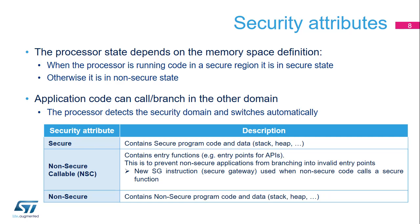Inter-security domain calls and returns are supported. The processor detects the security domain of the branch address and switches domain automatically. The ARMv8-M defines the following security attributes: secure region (containing secure program and data), non-secure callable region (which is secure but can be called from non-secure state), and non-secure region (containing non-secure program and data). The non-secure callable region enables non-secure software to call a secure service. It is declared by secure software and must contain a secure gateway (SG) instruction to cause the transition to secure state.